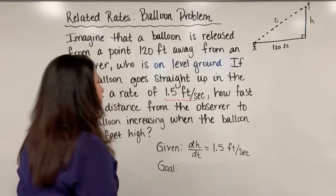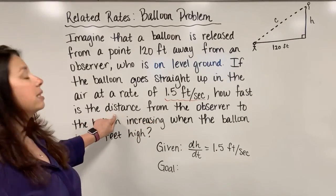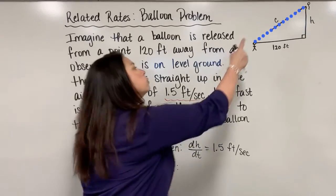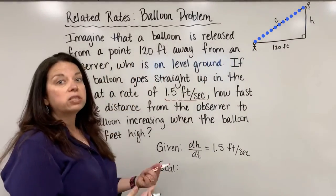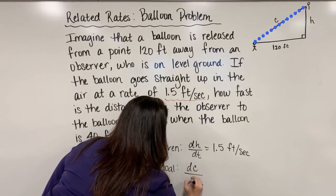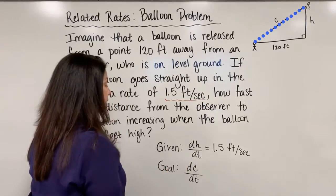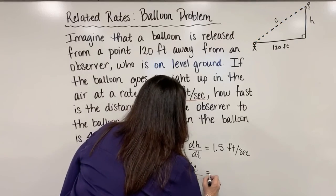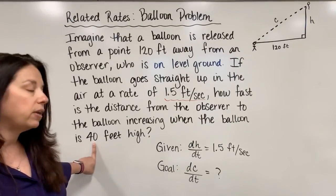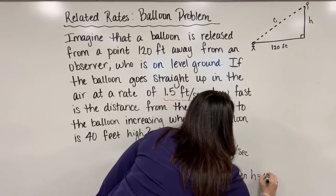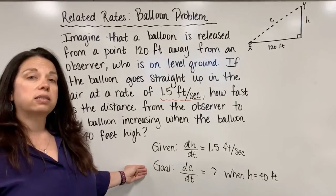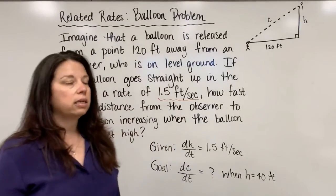Our goal in this problem is that we need to figure out how fast the distance from the observer to the balloon is changing. Since we call this side length C, the derivative of C relative to time would reveal that rate of change. So we can call that dC/dt. We want to know what that rate is at precisely when the balloon is exactly 40 feet above the ground, when H is 40 feet. So our goal is to find dC/dt when the height is exactly 40 feet.